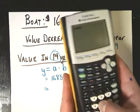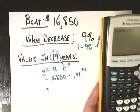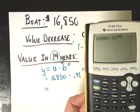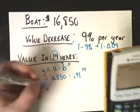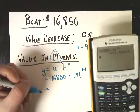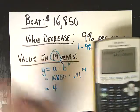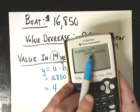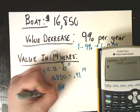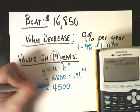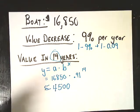Let's go ahead and type it in: 16,850 times 0.91 raised to the 14th power. In 14 years, your beautiful $16,000 boat will be worth — if you are lucky, and I'm going to do a little bit of rounding here because I'm optimistic about the cost of my boat — around $4,500, which is not very much compared to what it costs, but it's better than nothing.